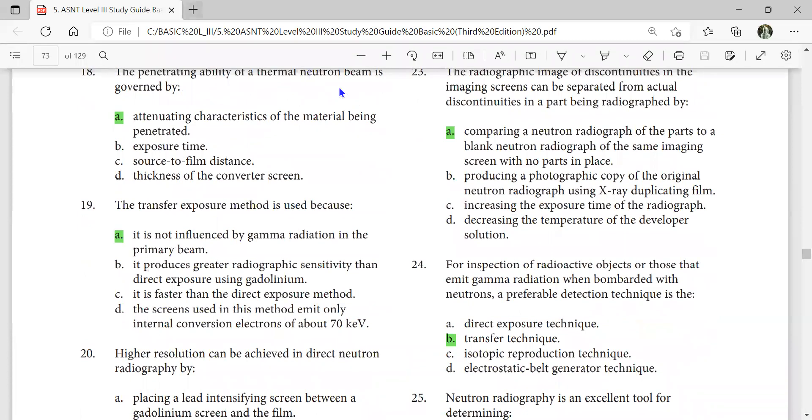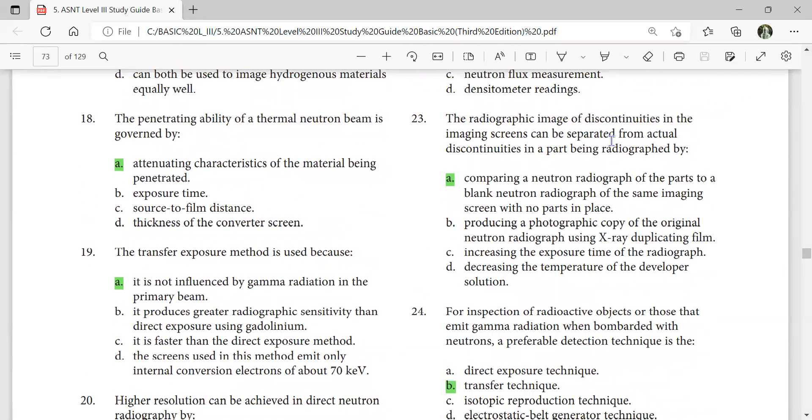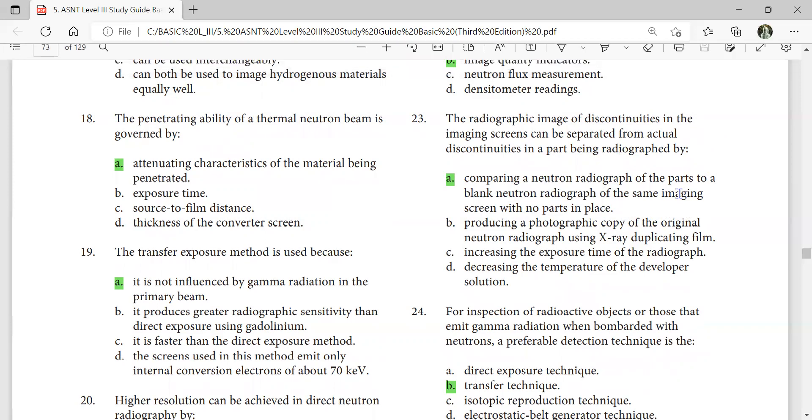The penetrating ability of a thermal neutron beam is governed by attenuating characteristics of the material being penetrated. The radiographic image of discontinuities in the imaging screen can be separated from actual discontinuities in a part being radiographed by comparing a neutron radiograph of a part to a blank neutron radiograph of the same imaging. The transfer exposure method is used because it is not influenced by gamma radiation in the primary beam.